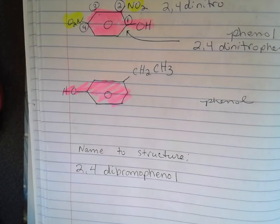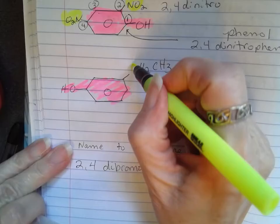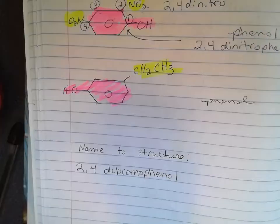And we have an ethyl group here. This is an ethyl group because there are two carbons.